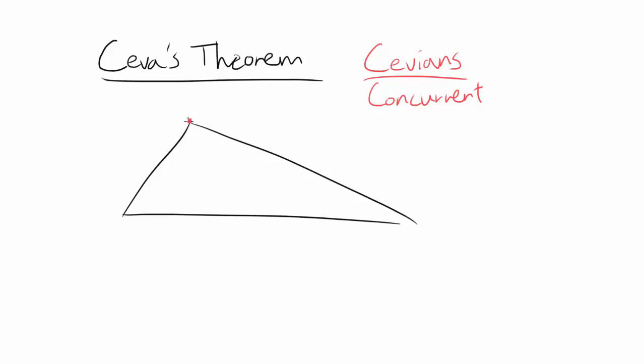Cevians are the line segments starting at one vertex of the triangle drawn to the other side. So this is a cevian, this is going to be a cevian, and this is going to be a cevian. There are of course infinitely many cevians you can draw from one vertex.